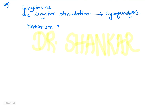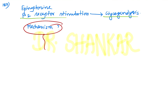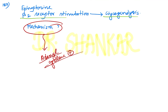Another question was about epinephrine: beta receptor stimulation and glycogenolysis — what is the mechanism? The correct option is adenyl cyclase enzyme activation. Epinephrine causes beta receptor stimulation, which activates adenyl cyclase enzyme, followed by protein kinase activation, leading to phosphorylation and activation of enzymes responsible for glycogenolysis and gluconeogenesis.